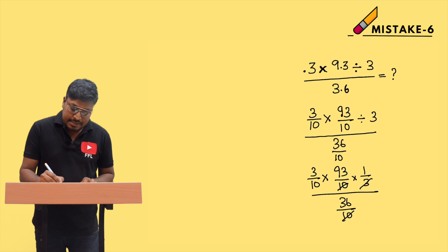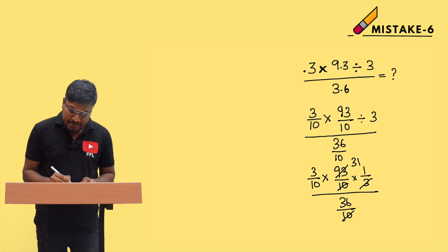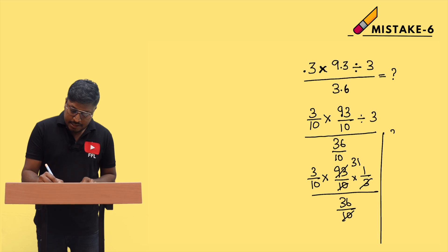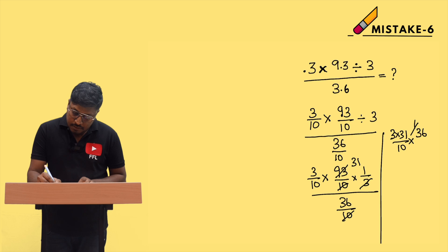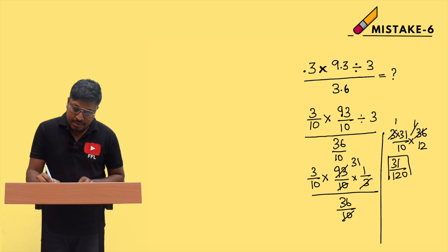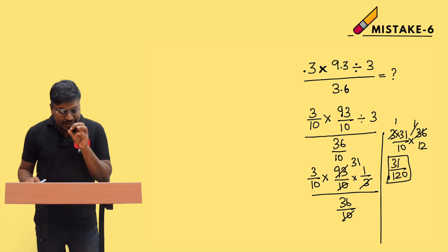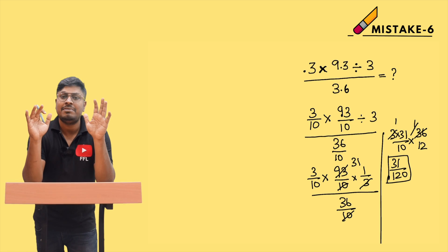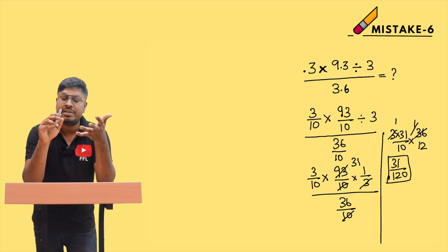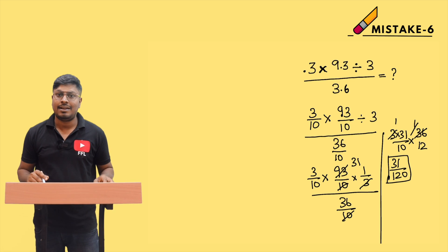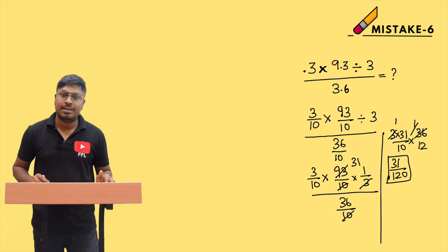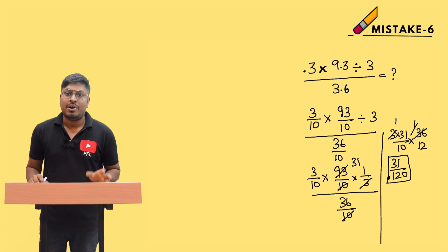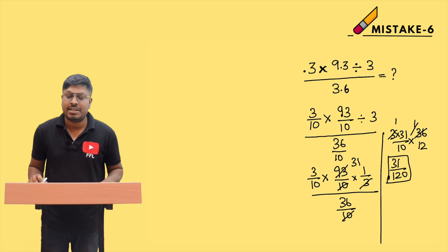Cancel 10 and 10, and 3 with the 93 — 93 ÷ 3 = 31. So we have (3 × 31) ÷ 10 all divided by (36/10). Bringing 36/10 to the numerator gives 31/36. Simplifying: 3 × 1 = 3, and 31/120 is the final answer. It's easy when you remove the decimal point first. I personally make many mistakes with decimals — that's why this technique matters.